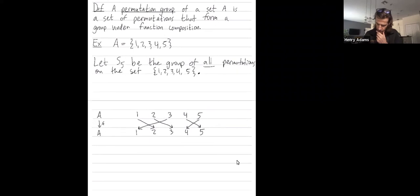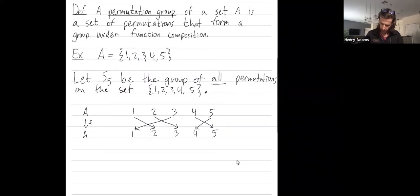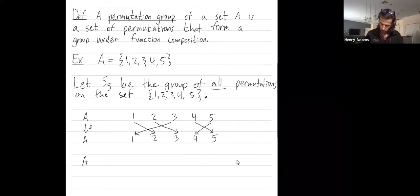So here's F, it's a permutation on the set. Let me draw another permutation, G.